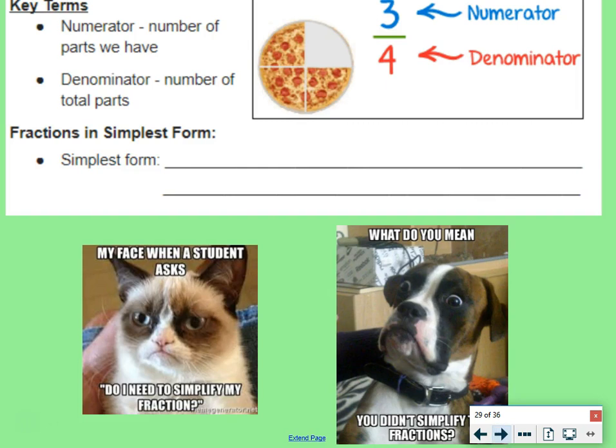First off, we have some key terms. The numerator is the top number of the fraction, and it's the number of parts we have. So if we look at our pizza, we have one, two, three pieces of pizza.